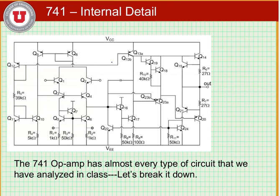In this lesson, we're going to learn about the internal details of the 741 op amp. The reason that we're going to do this is the 741 op amp has about every circuit that we've examined thus far in this course, including DC biasing circuits and gain stages.